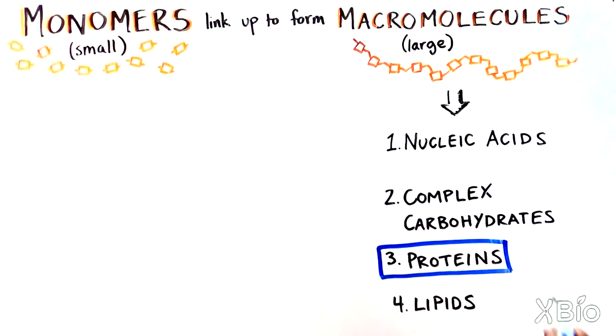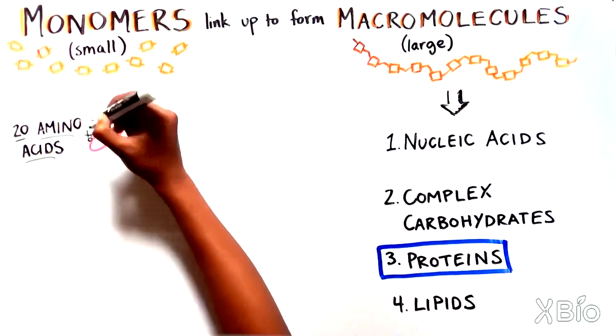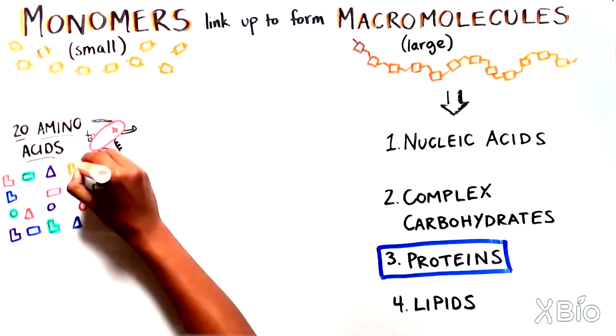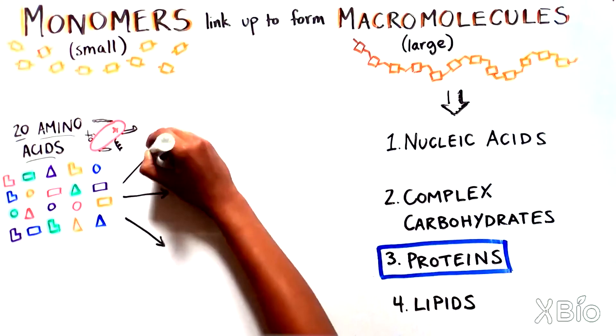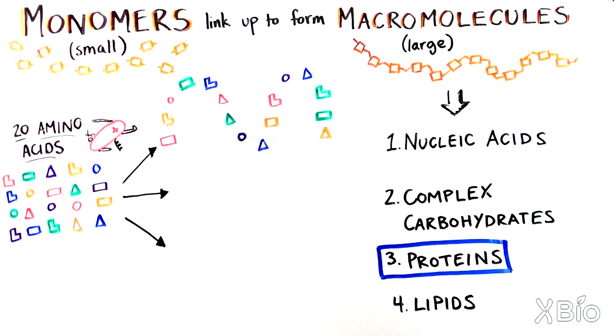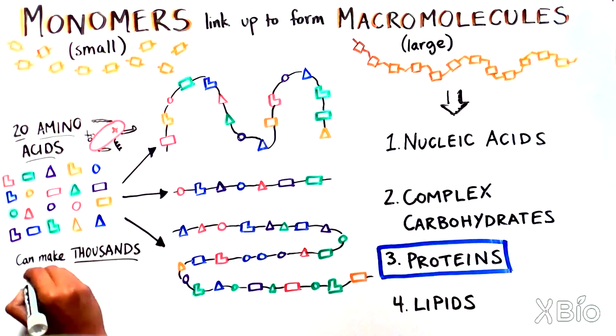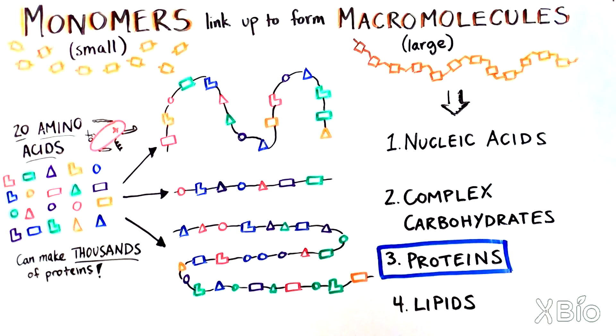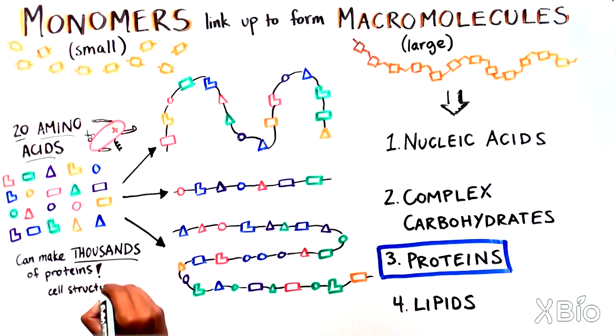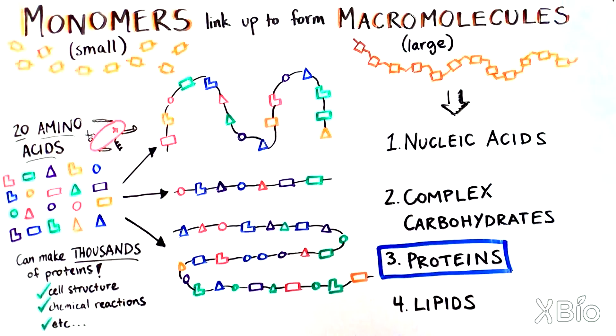Amino acid monomers join directly together to form proteins. As we mentioned, there are 20 different amino acids. These can link up in many different orders and in chains of varying length, which means that we can make many thousands of different types of proteins. These proteins are used for cell structure, to carry out chemical reactions inside cells, and many other functions.